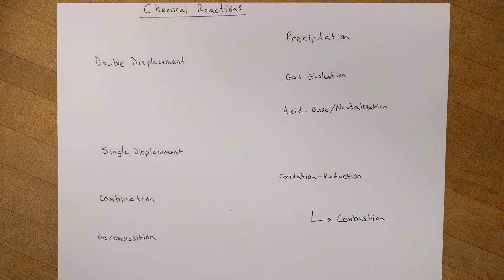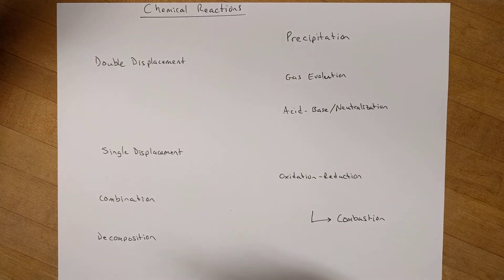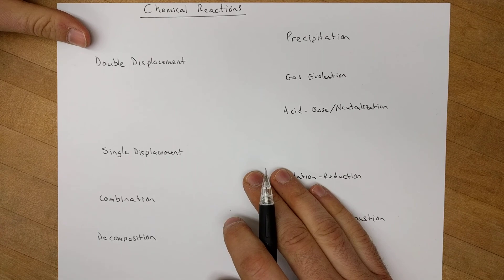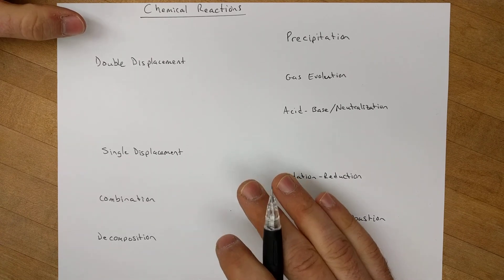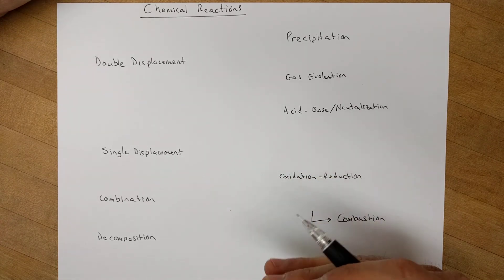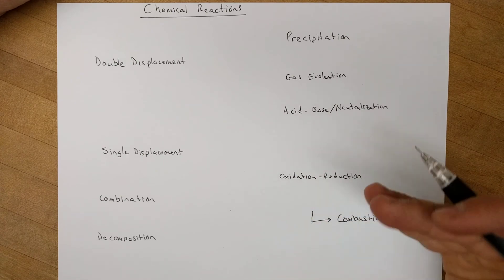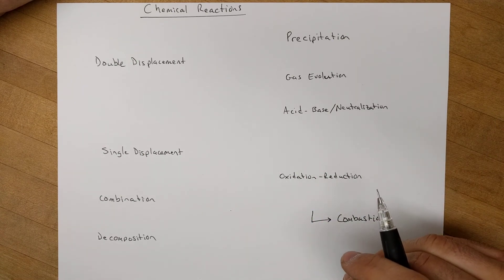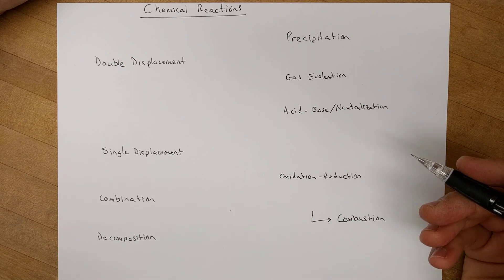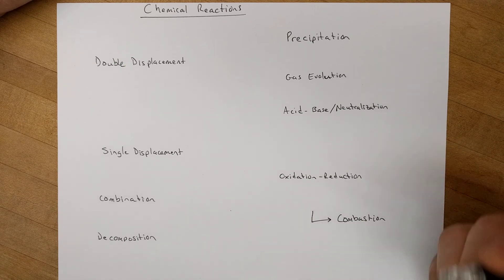Hello everyone. I want to talk today about chemical reactions. So before we begin, there are really an amazing number of chemical reactions that exist, and you can categorize them a lot of different ways. If you continue on in chemistry, you'll end up trying to work through most of those different types of reactions and learn how to understand them, predict when they'll happen, and what the products will be.